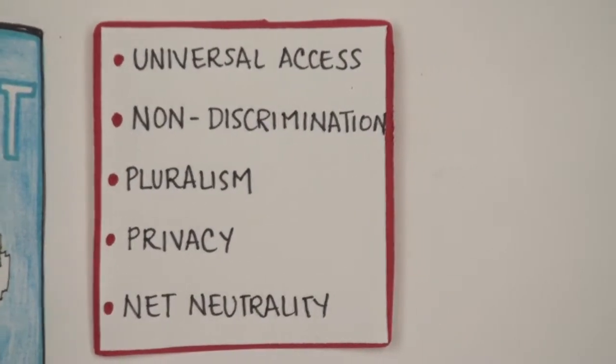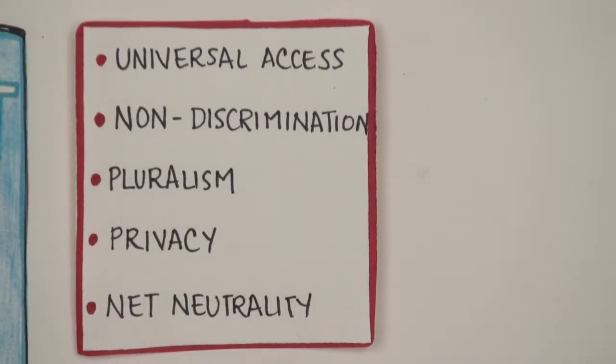First, there are five general principles: Universal Access, Non-Discrimination, Pluralism, Privacy and Net Neutrality. With the possible exception of Net Neutrality, which requires a little bit of context, these are all easy to understand.